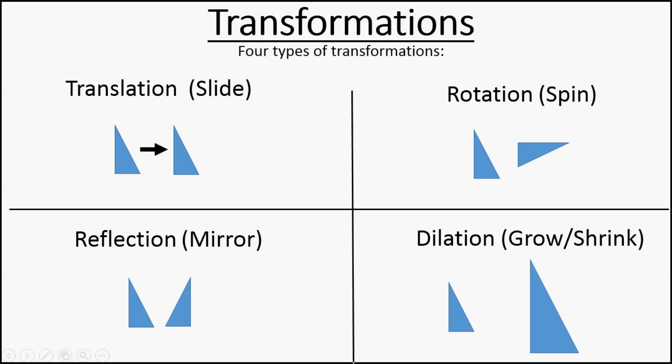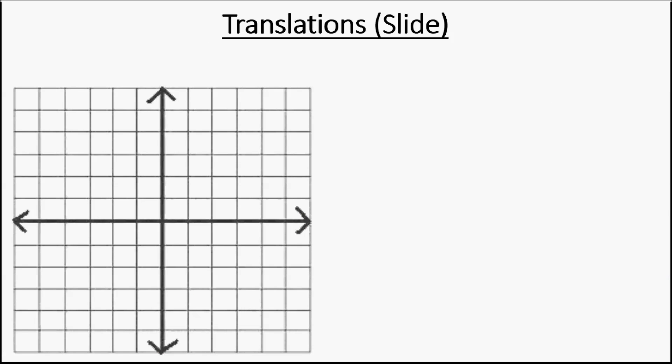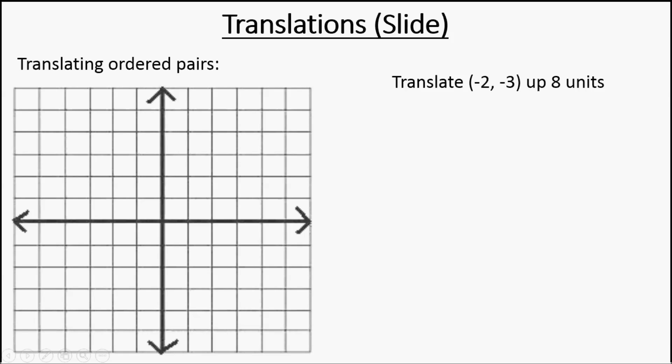The two we're going to talk about in this presentation are the translation and the reflection. So for translations, we're going to slide different objects or points. In this problem we're going to take a point — an ordered pair of negative two and negative three — and we're going to move it up eight units.